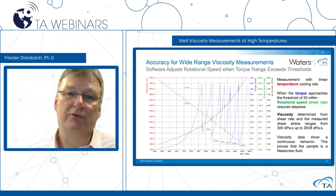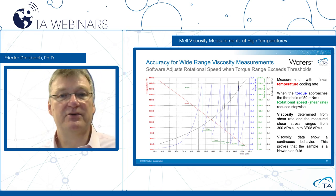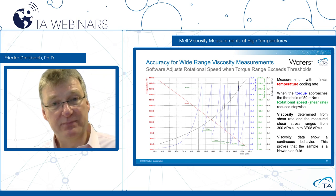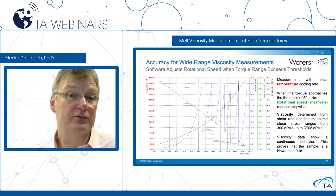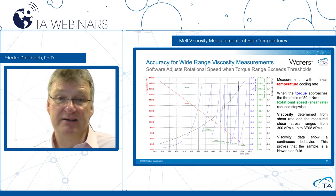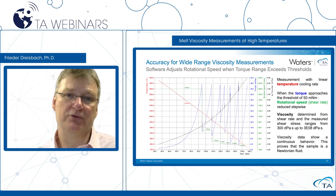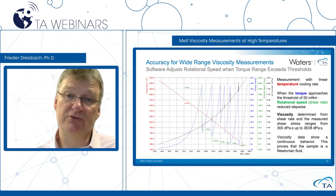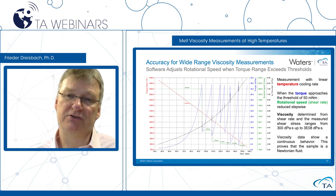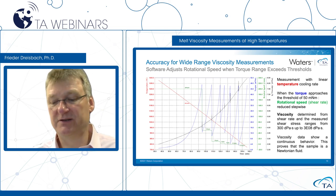This working principle of the rotational viscometer with changing rotational speed is of course only possible for Newtonian fluids — otherwise the viscosity would not be a steady curve. For non-Newtonian fluids, we use the different working principle: isothermal measurement with changing rotational speed to measure the shear rate-dependent viscosity.